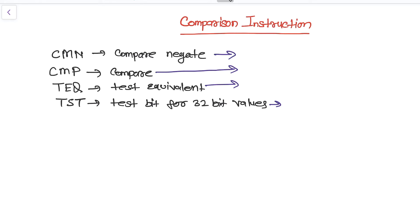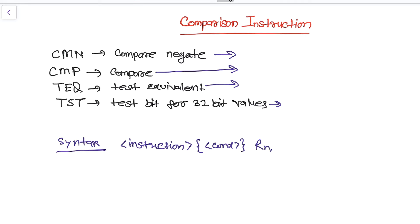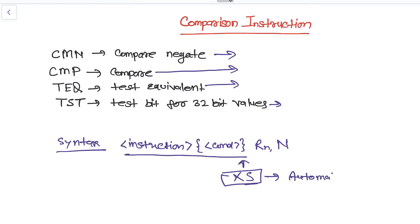Before understanding each instruction, let's look at the syntax. The syntax is: instruction, then condition code, then Rn, then capital N. You might notice there is no S suffix here. Even without the S suffix, these instructions will automatically update the flag register.